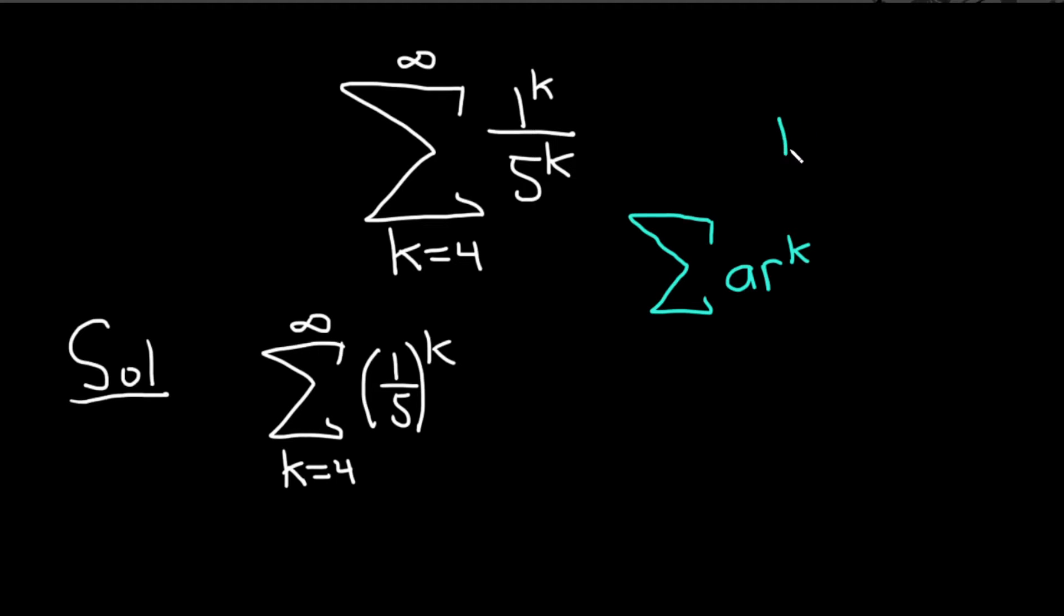If the absolute value of r is less than 1, the series converges. In this case, r is 1/5, which is certainly less than 1, so it's going to converge.